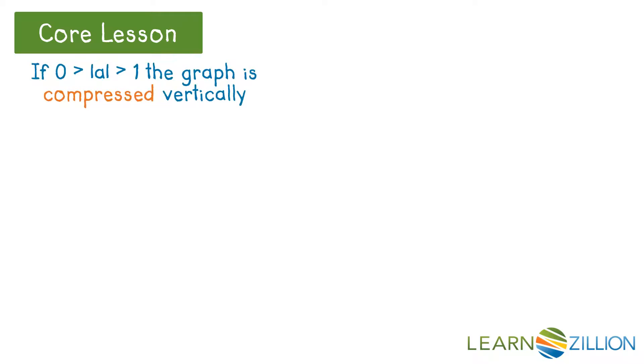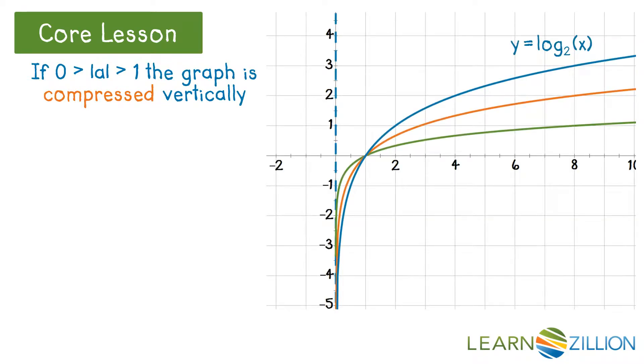With a vertical compression, let's start with log base 2 in blue. As the value of a gets smaller, visually you can see it really is compressed vertically.